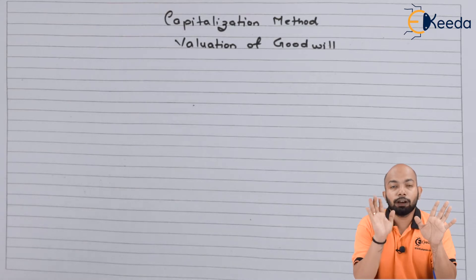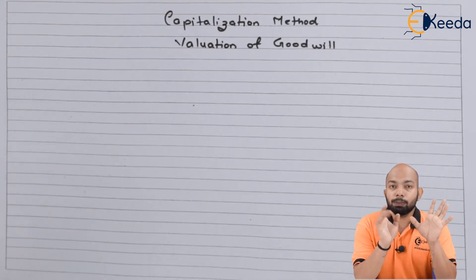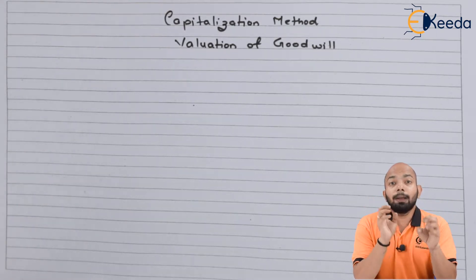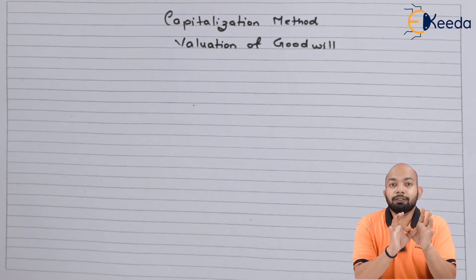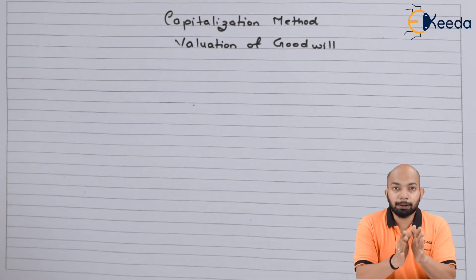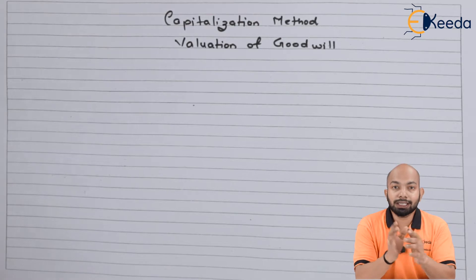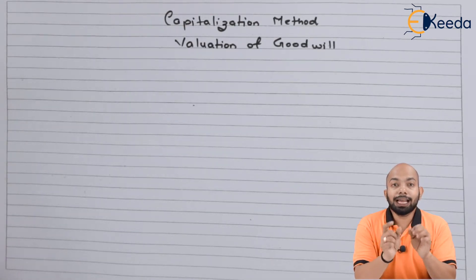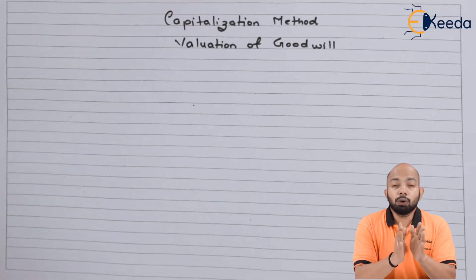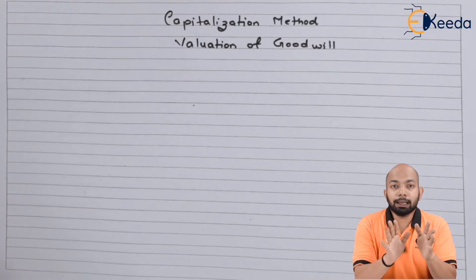Once you have Part A and Part B, subtract Part B from Part A. The resulting balance is the goodwill of the firm for that specific year. If the question asks for goodwill for the next three or five years purchase, simply multiply the goodwill amount by the number of years to get your final answer.